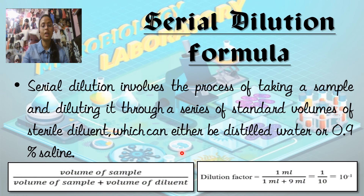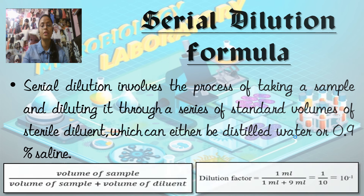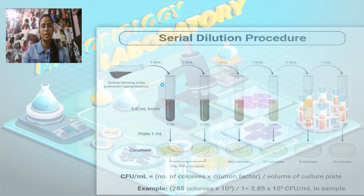We can find out the dilution factor as: volume of sample divided by volume of sample plus volume of diluent. We will take a sterile diluent, which can be either distilled water or 0.9% saline. It is a process of taking a sample and diluting it through a series of standard volumes, which can be fixed by us.